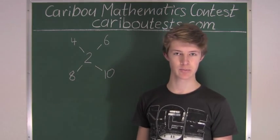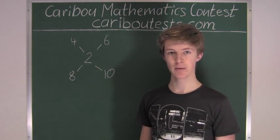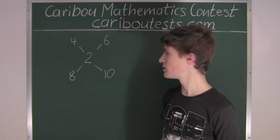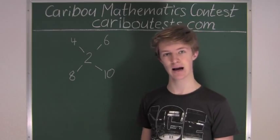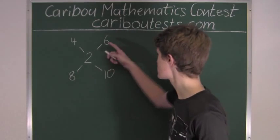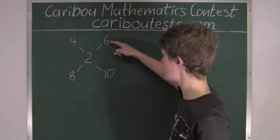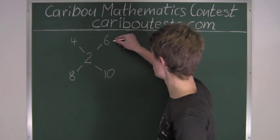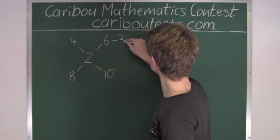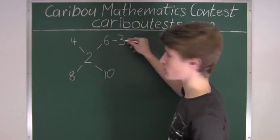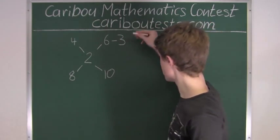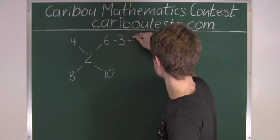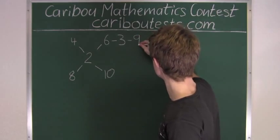Now let's go to 3. 3 is also a prime number, but it has multiples which are 6 and 9. Since 6 is already connected to 2, we will write the 3 beside that. And since 3 is a factor of 9, we will write the 9 beside the 3.